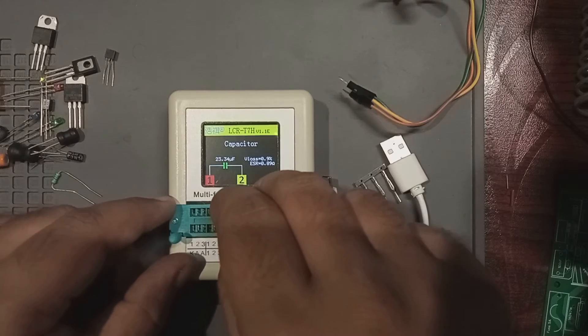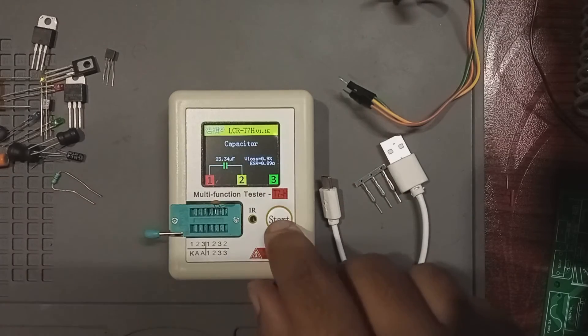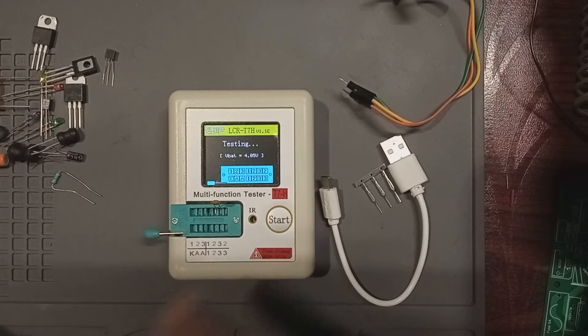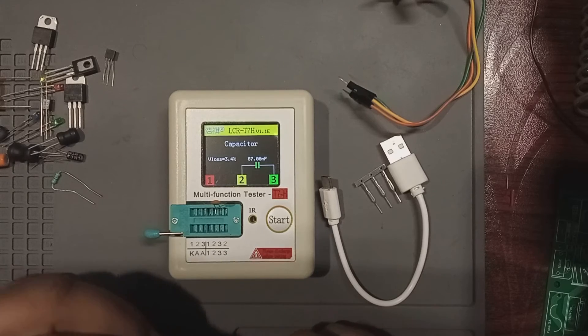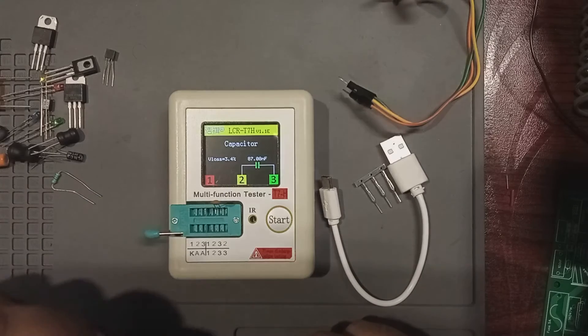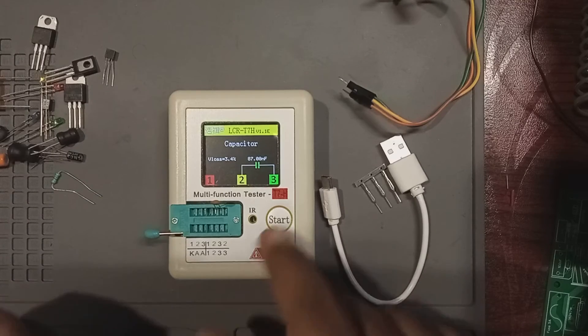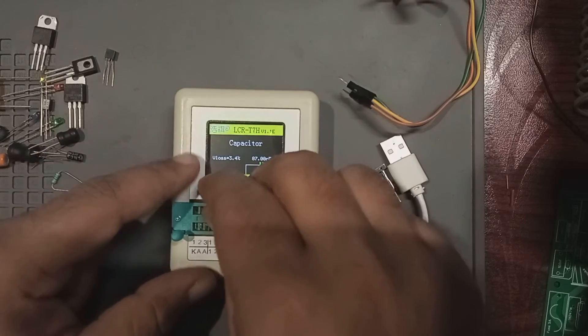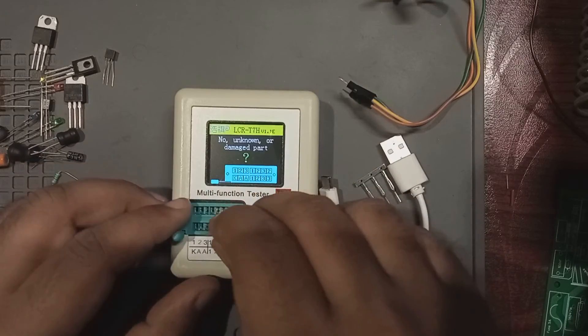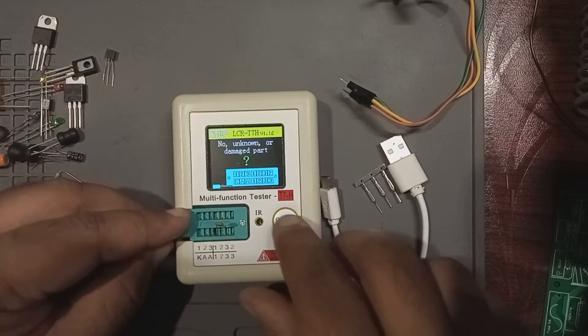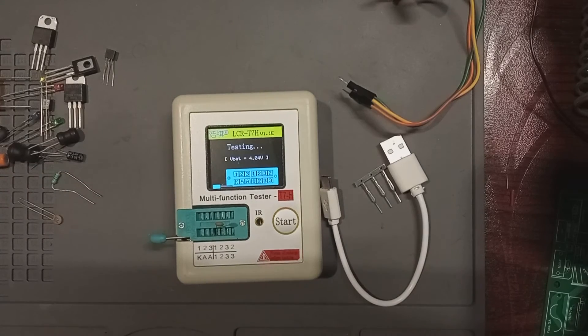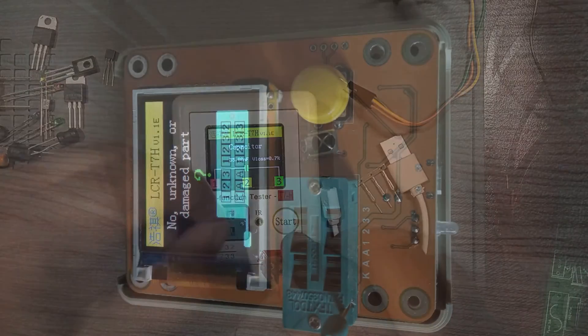Let's now connect another 0.1 microfarad disc capacitor. And it is detected as 87.08 nanofarads. We also have the V loss of 3.4%. But I don't see the ESR here. Now let's connect a 40 nanofarad capacitor. And as you can see it is detected as 35.88 nanofarad capacitor with V loss of 0.7%.